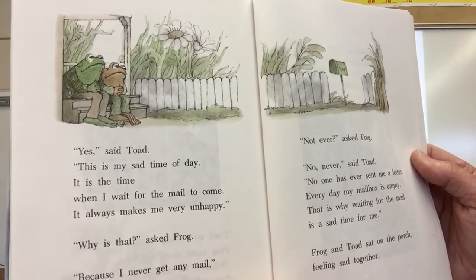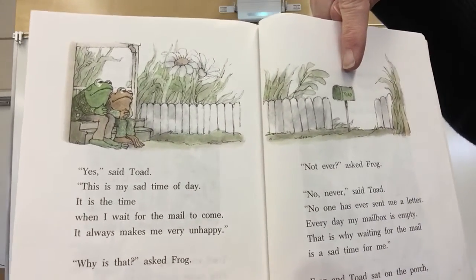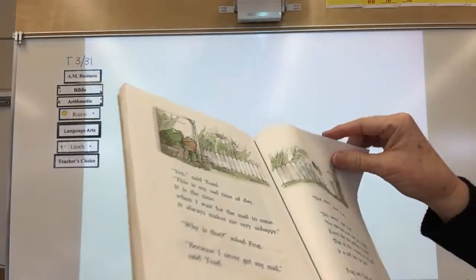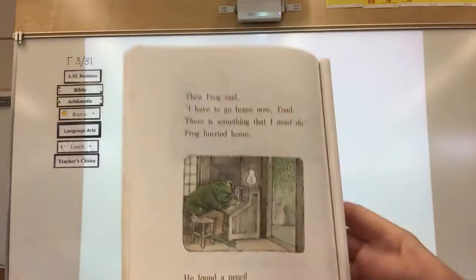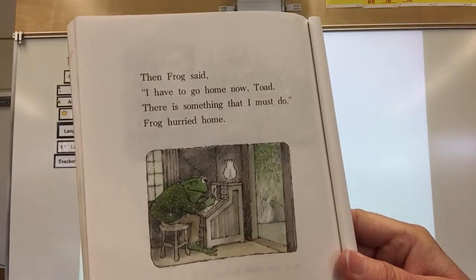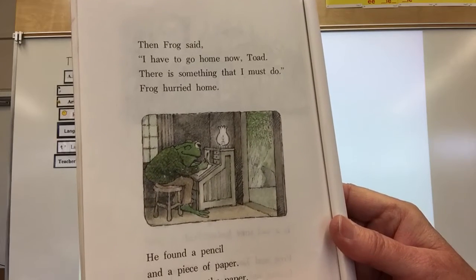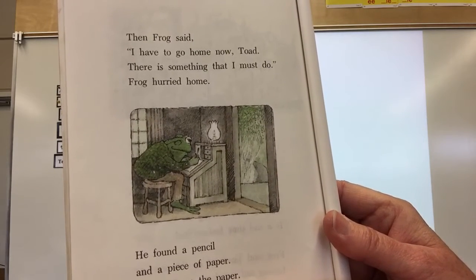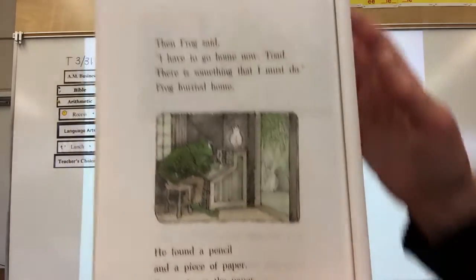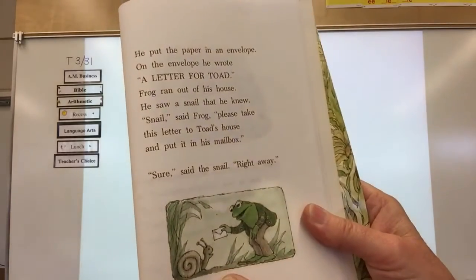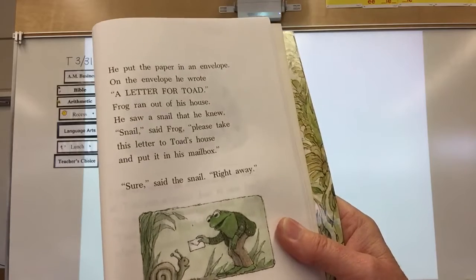Not ever? asked Frog. No, never, said Toad. No one has ever sent me a letter. Every day my mailbox is empty. That is why waiting for the mail is a sad time for me. Frog and Toad sat on the porch, feeling sad together. And here is his mailbox. Then Frog said, I have to go home now, Toad. There is something that I must do. Frog hurried home. He found a pencil and a piece of paper. He wrote on the paper.